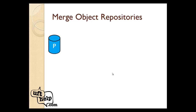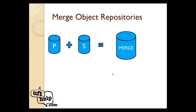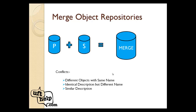The merge object repository tool takes into consideration two object repositories — one is primary and another is secondary — and these are merged into a resultant object repository. In case we have some conflicts, what type of conflicts can there be? We can have different objects where the objects are different but the name is the same. This will be shown as a conflict, and we can resolve it by choosing whether we want to go with the object from the primary object repository, from the secondary, or keep both objects.